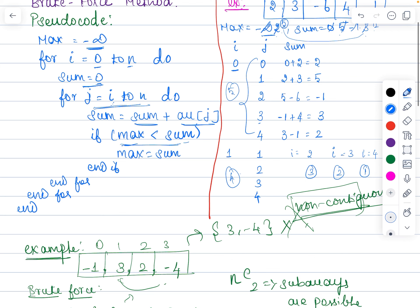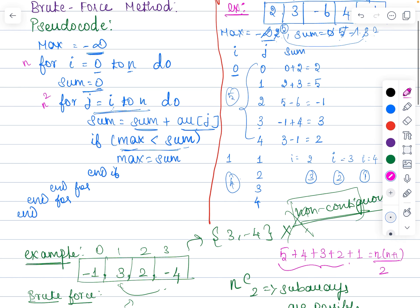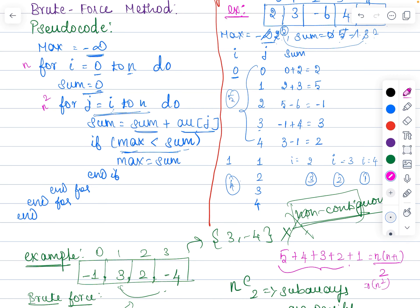The algorithm checks all combinations and finally the maximum value is retained under the max variable, which is the maximum subarray sum. Regarding time complexity: the i loop executes n times, and the j loop executes following the sum of n natural numbers pattern — 5+4+3+2+1 — which by the formula n(n+1)/2 gives O(n²). So the complexity of the brute force method is O(n²). We can explore whether the remaining methods reduce this time complexity further.